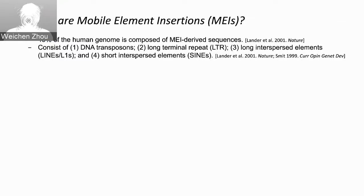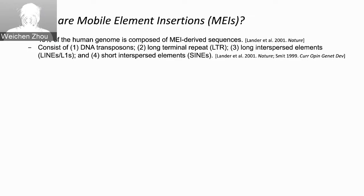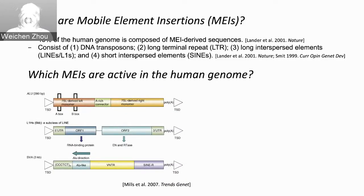Let's get some background first. About 45 percent of the human genome is composed of mobile element insertion-derived sequences. They have four types: DNA retrotransposon, LTR, LINE, and SINE.